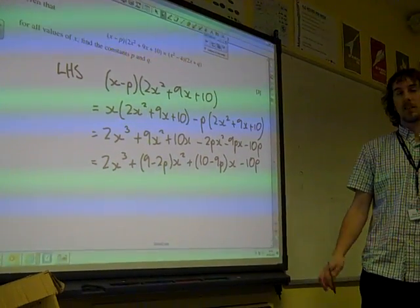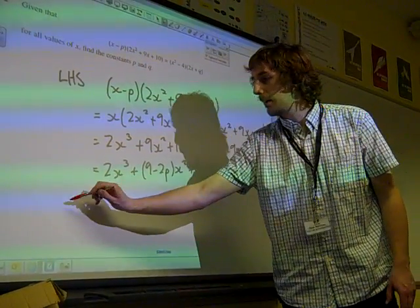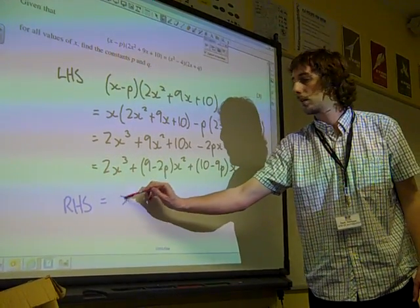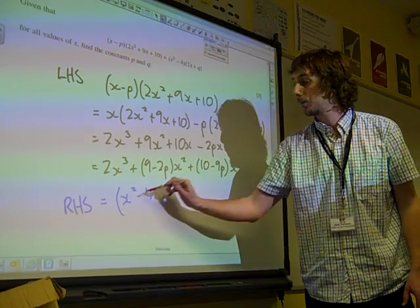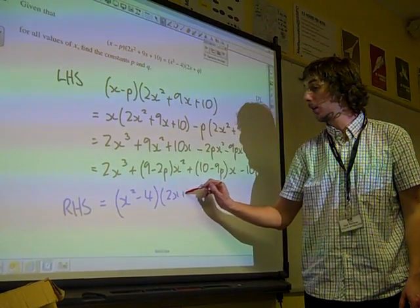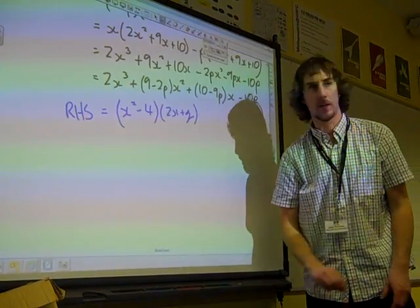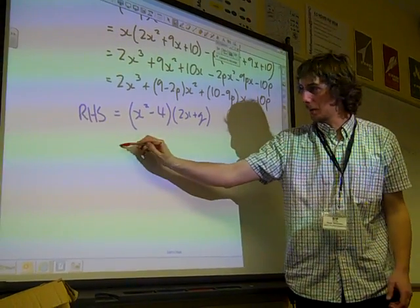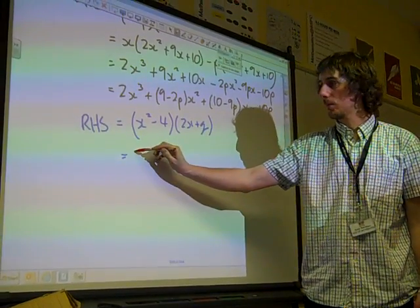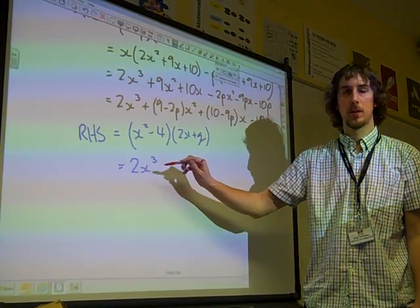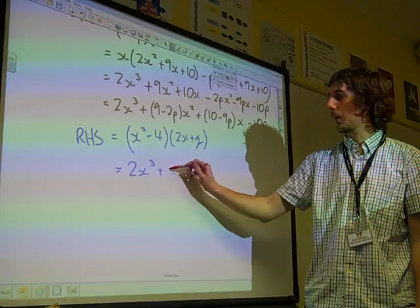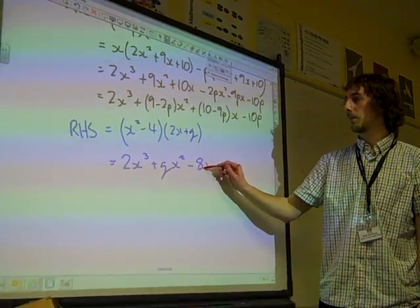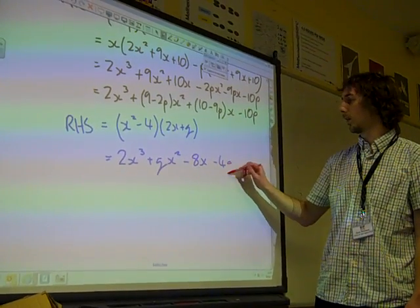That was the left hand side. Let's do the same thing with the right hand side. Now this really looks like it's a little bit easier to multiply this out, because we've only got 2 brackets each with 2 terms in them. And so we're going to say 2x cubed plus qx squared minus 8x minus 4q.